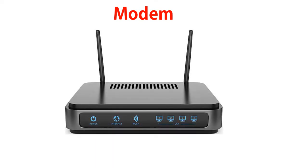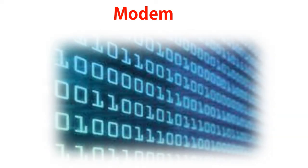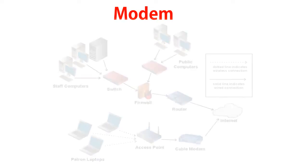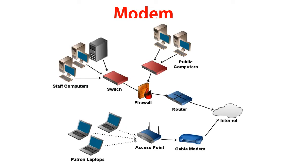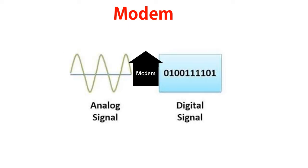A modem is a networking device that enables a computer to send and receive data over the telephone and cable lines. The data understood by the computer is digital, whereas the phone line or cable wire can only transmit analog data. Therefore, the modem plays a vital role to convert digital signal into analog and analog signal into digital.